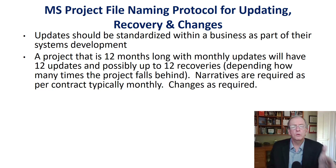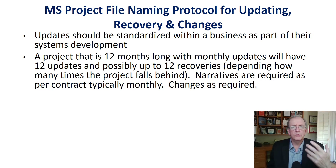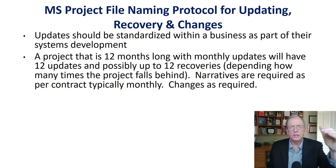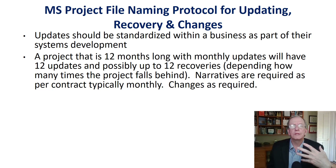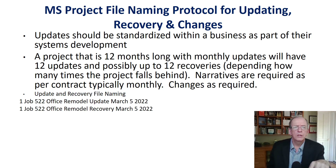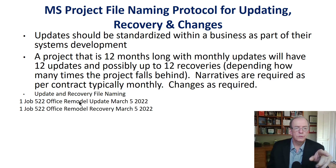Narratives are done every month when you do an update. If you're falling behind, you try to explain the highlights of what went on so you have good documentation — for example, how many bad weather days you had, the dates, and the reasons. It's all documented in the narrative, and that information is pulled from the schedule. As you can see, we have the job number, the project name, the update type, and the date.